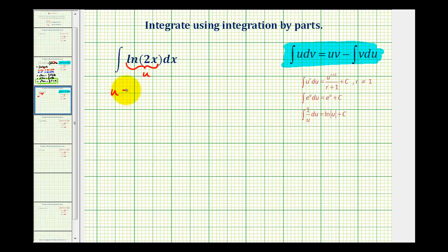If we let u equal natural log 2x, we'll have to differentiate to determine differential u. The derivative of natural log 2x will be 1 over 2x times the derivative of 2x, which will be 2 times dx.